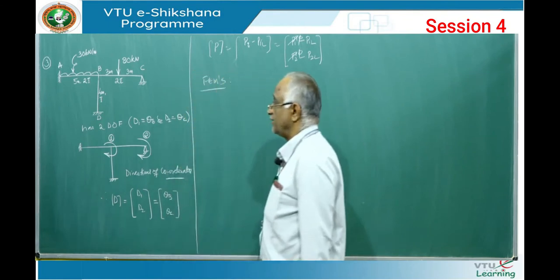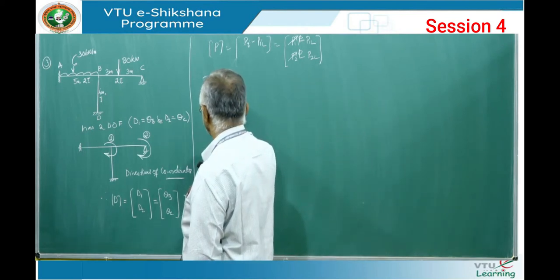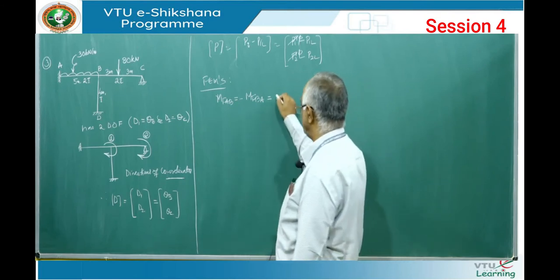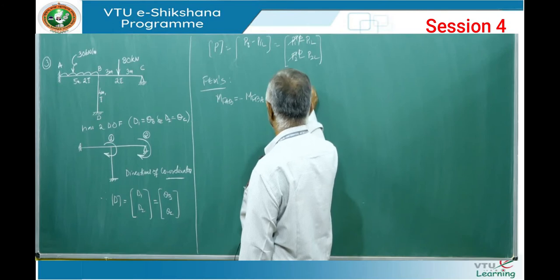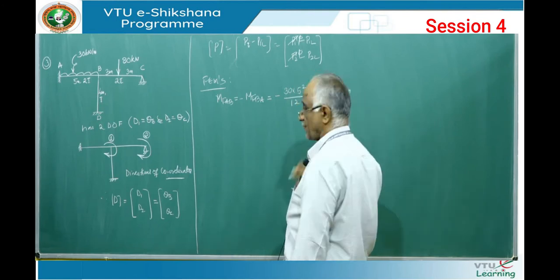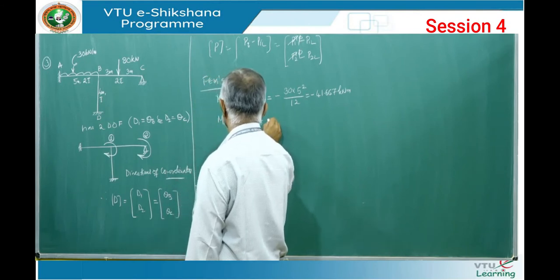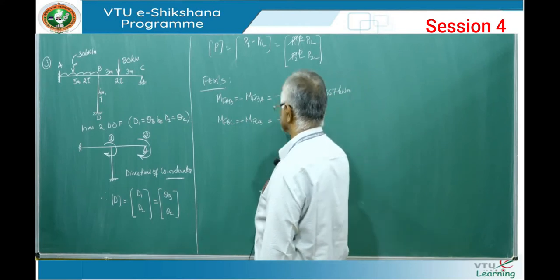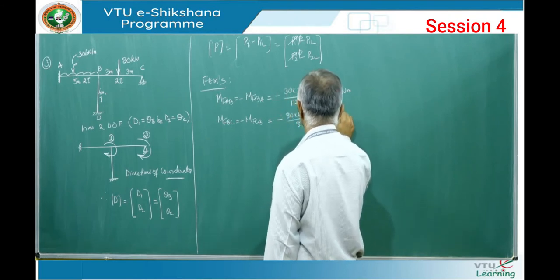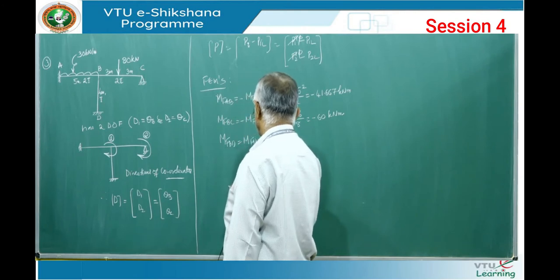Fixed end moments: I have three members — AB, BC, and BD. BD is not loaded, so it will be 0. MF_AB equals MF_BA because the load is symmetrical on beam AB, so it is minus W L² / 12 = minus 30 × 5² / 12 = minus 41.667 kN·m. For span BC, MF_BC = minus MF_CB because the point load is symmetrically applied: minus WL/8 = minus 60 × 6 / 8 = minus 60 kN·m. MF_BD = MF_DB = 0.